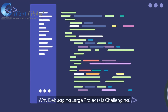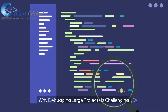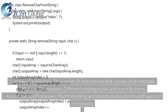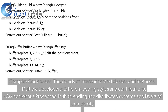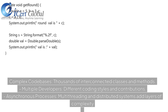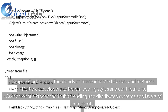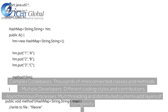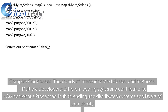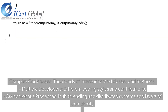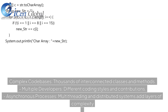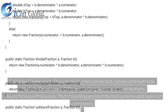Why Debugging Large Projects is Challenging. Complex codebases with thousands of interconnected classes and methods, multiple developers with different coding styles and contributions, asynchronous processes, multi-threading, and distributed systems all add layers of complexity.